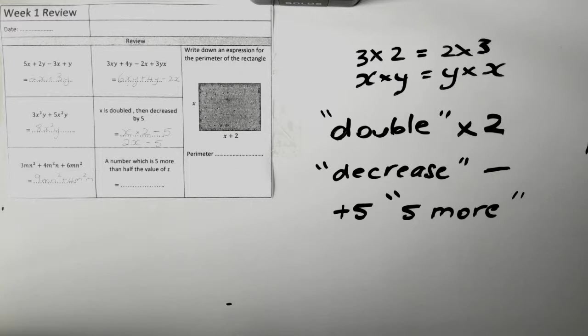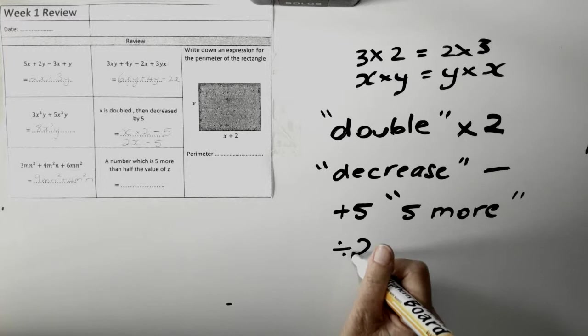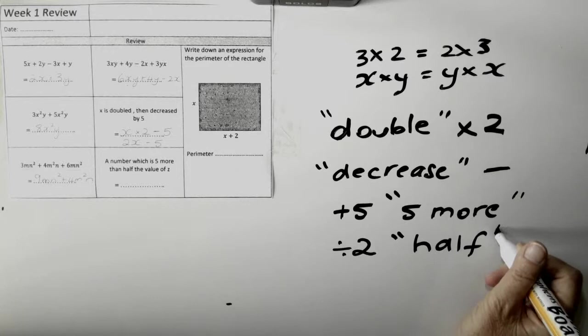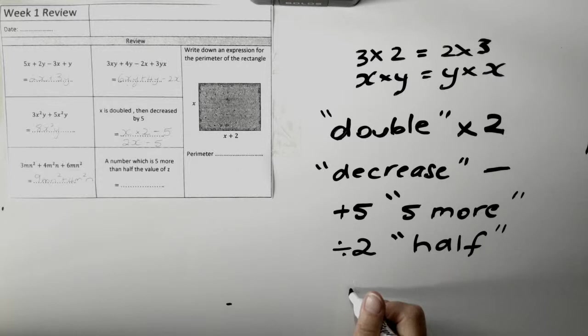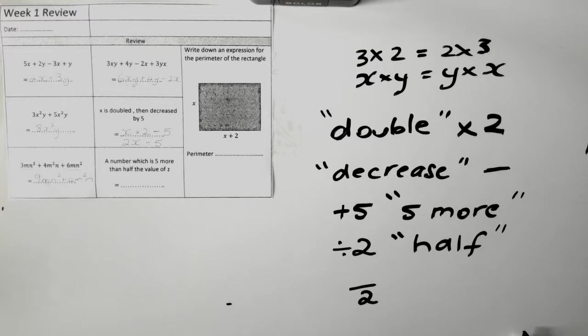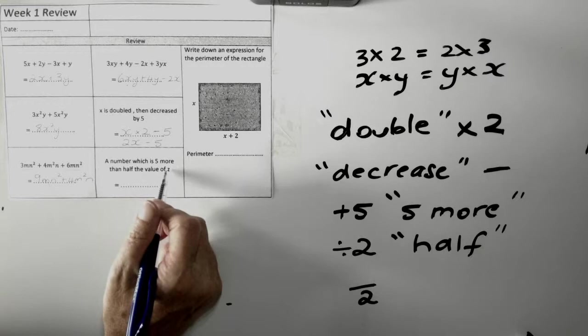If a cake is halved, that means you cut it in half, or you divide it between two people. So, half could be written divided by two. And another way we sometimes write divided by two is whatever it is over two, which is a way of writing divided by two. So, what we're going to do is a number which is five more than half the value of X.